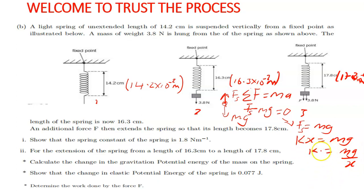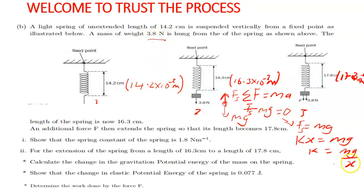The magnitude of the restoring force is kx, so kx = mg, meaning k = mg/x. Here, k is the spring constant, m is the mass, g is acceleration due to gravity, and x is the extension. Since we don't have the mass but we have the weight mg given as 3.8 Newtons, we need to find the extension x. The extension is found from the final length after the mass is hung.